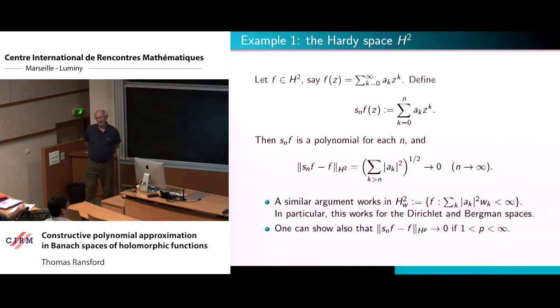So this uses the fact that the Riesz projection is continuous, so the proof does not go over to either P equals 1 or P equals infinity, and in fact the result is false there. I'll talk a bit more about H¹ in just a moment. In H infinity, of course, the polynomials are not even dense, so you couldn't possibly hope that the SNs converge. In the case of H infinity, of course, there is a nice closed subspace in which the polynomials are dense, namely the disk algebra, and that's our second example.